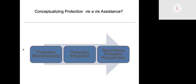Protection mainstreaming is an imperative for all humanitarian actors. It's a way of designing and implementing all programs so that protection risks and potential violations are taken into consideration. To mainstream protection, actors need to understand who is at risk, from what or from whom, as well as why, and the consequences of their actions.